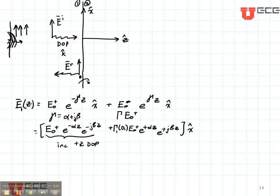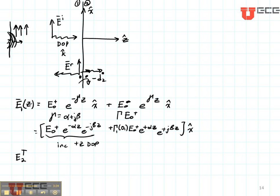Let's also think about the electric field that's over here in region two. If we were looking at our three layer region, that would be at minus D two. So E two is going to have a positive and a negative traveling wave. Let's just consider the transmitted wave — that's the part going in the plus Z direction. That is going to be E zero plus times a transmission coefficient at minus D two.